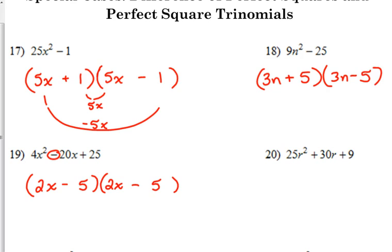Notice we get the exact same thing in both sets of parentheses, and you can check it. You get negative 10x on the outside. You get negative 10x on the inside. That's what's going to give us the negative 20x. What you need to do with this, guys, is you should express your answer. When you have the exact same factor listed twice, you need to write it as 2x minus 5 squared. You need to write it as 2x minus 5 squared.